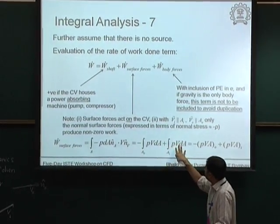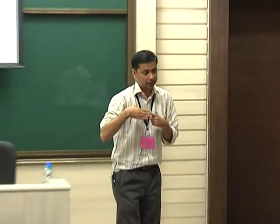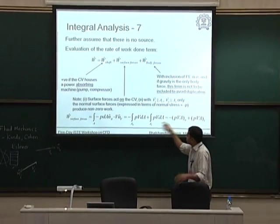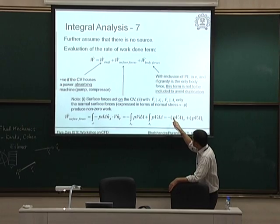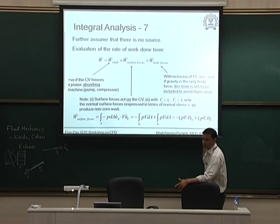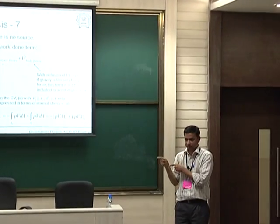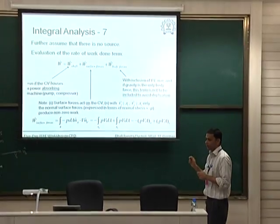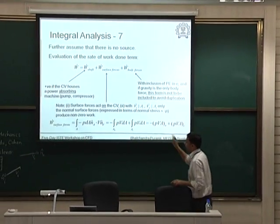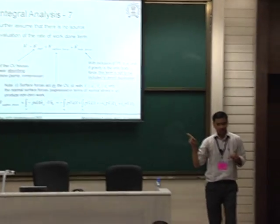The two integrals are first written separately, but since we assumed uniform velocity over the inlet and outlet, there is no integral to carry out. It is just scalar multiplication of the entire area with the velocity. So this integral goes away: what is left is P times V times A at the outlet with a minus sign plus P times V times A at the inlet.